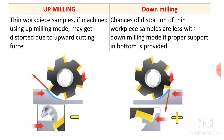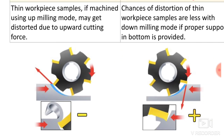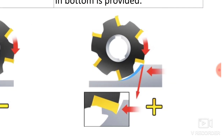The fifth difference: a thin workpiece machined using up milling mode may get distorted due to the upward cutting force trying to lift it. In down milling, chances of distortion of a thin workpiece are less with down milling mode, provided proper support at the bottom is provided. Since the cutting force is downward, there are fewer chances of the workpiece getting distorted, but there must be rigid support at the bottom.